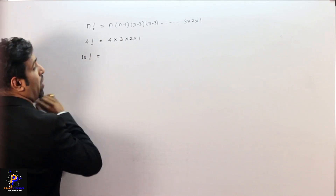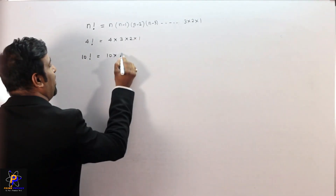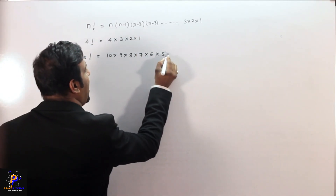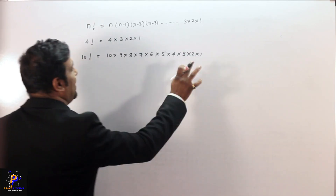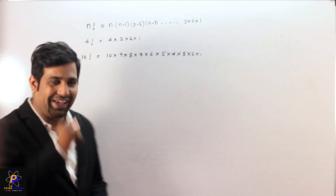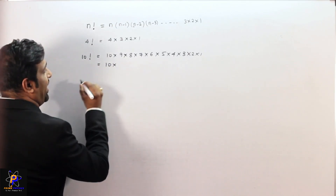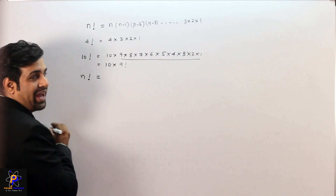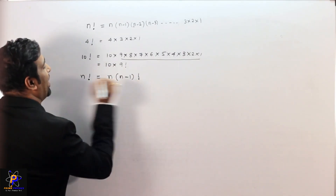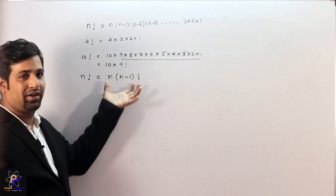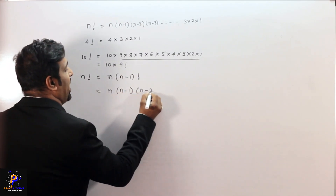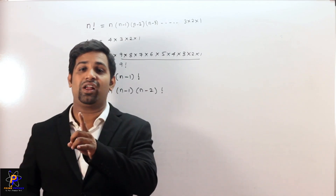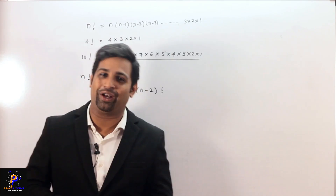We can also write 10 factorial as 10 × 9 factorial. So n factorial can be written as n × (n−1) factorial, and further as n × (n−1) × (n−2) factorial. This is how we write factorials. Remember: factorial means the multiplication of the integer and all smaller integers below it.